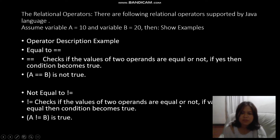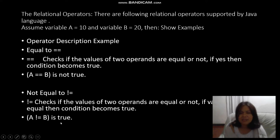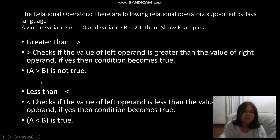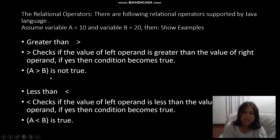Not-equal checks if the two values or operands are not equal. If values are not equal, the condition becomes true. For example, 10 is not equal to 20, so that is true. Greater-than checks if the left operand is greater than the right operand — if yes, the condition becomes true. In this example, 10 greater than 20 is false.